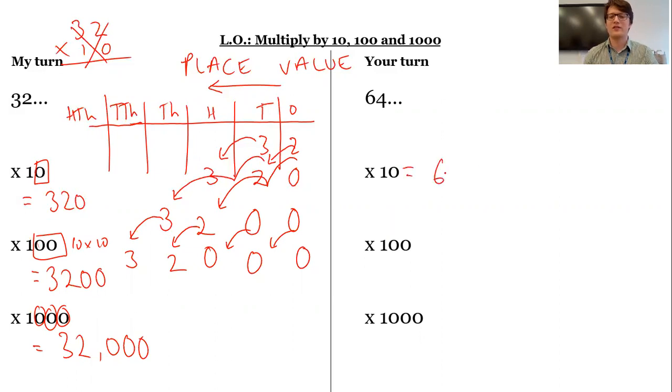Okay, so we're going to get 640, 6,400, and 64,000.